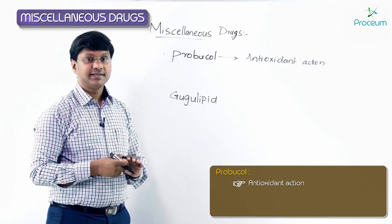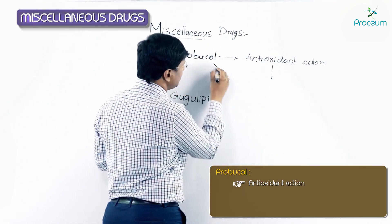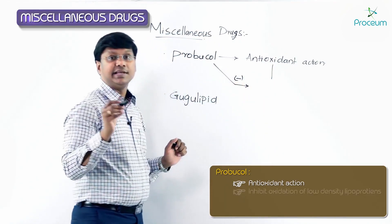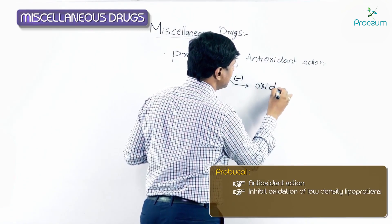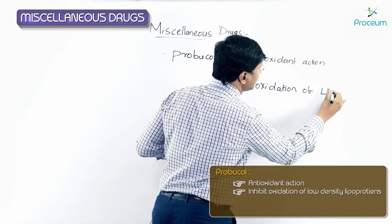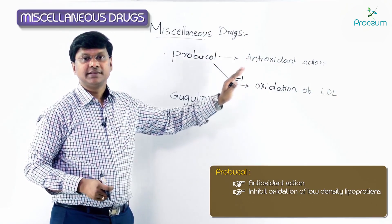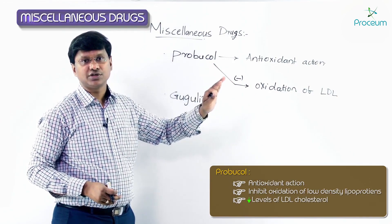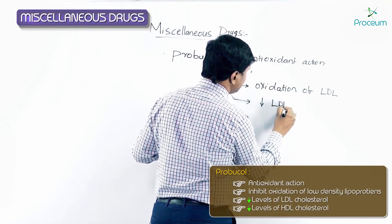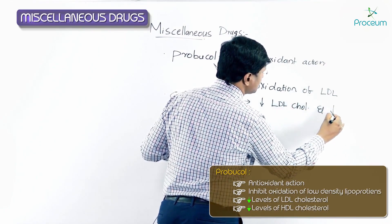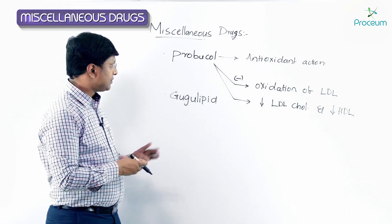Because of its antioxidant property, probucol inhibits the oxidation of LDL — low density lipoprotein. As a result, it causes a reduction in the levels of both LDL cholesterol and HDL cholesterol.